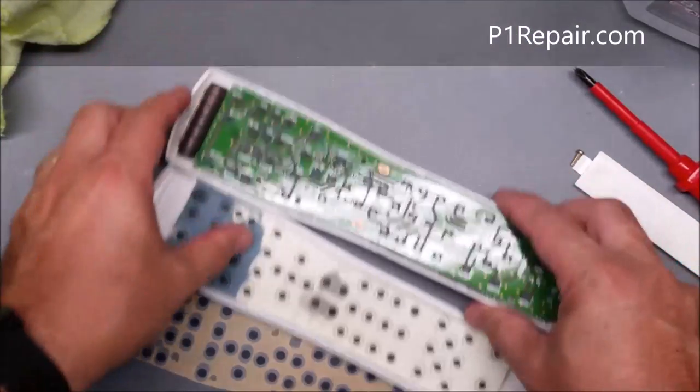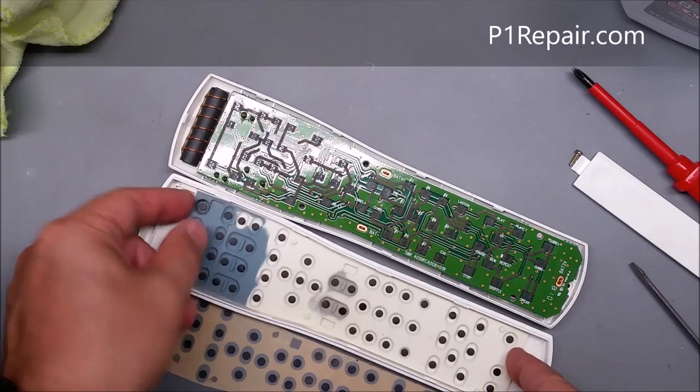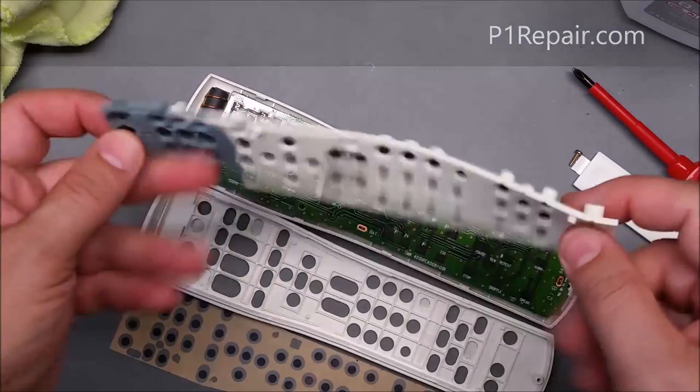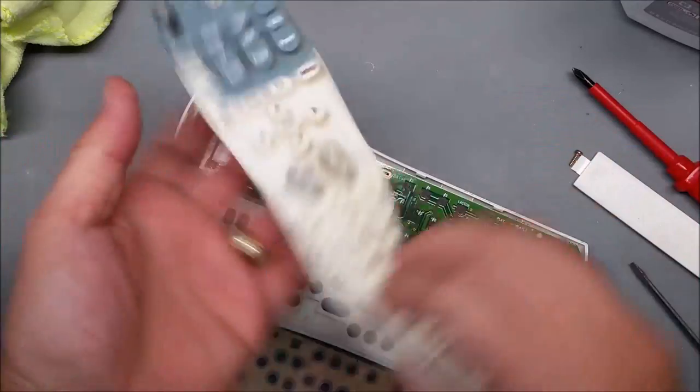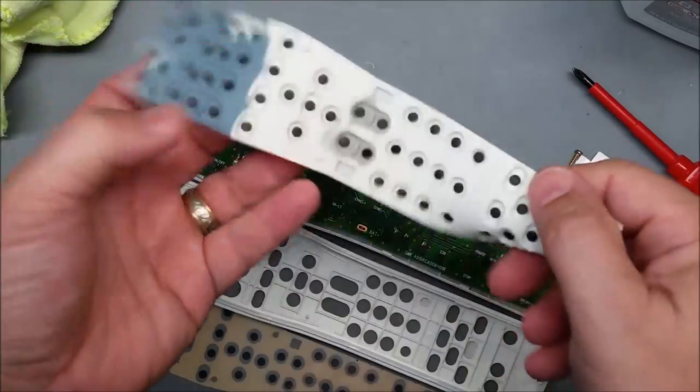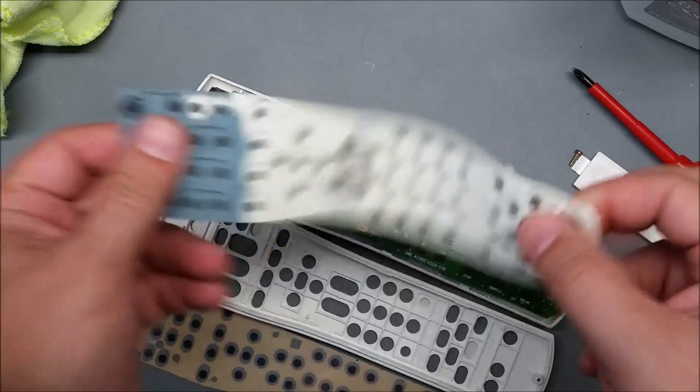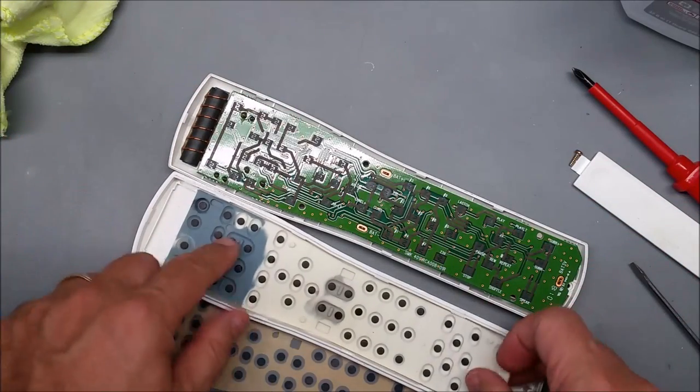Now we've got the circuit board and the rubber keypad right here. If this is really dirty, oily, or just gunky, you could just take it to the kitchen sink and wash it with soap and hot water, and let it dry off good before you put it back.